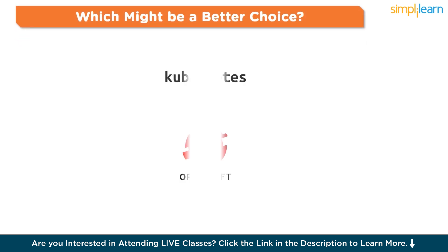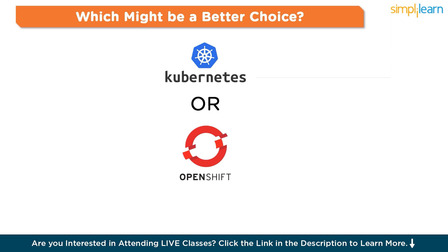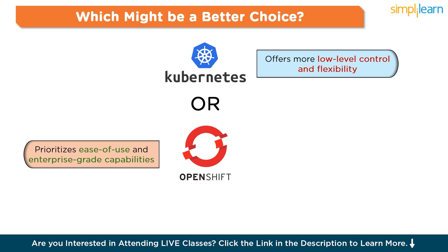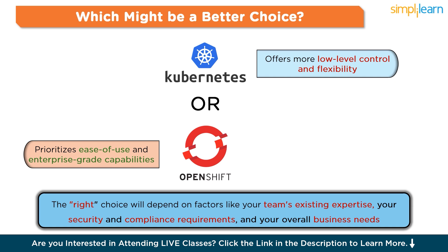Let us now understand which might be a better choice — Kubernetes or OpenShift. In summary, Kubernetes offers more low-level control and flexibility, while OpenShift prioritizes ease-of-use and enterprise-grade capabilities. The right choice will depend on factors like your team's existing expertise, your security and compliance requirements, and your overall business needs. If you have a large enterprise with complex security and operational demands, OpenShift may be a better fit. But if you have a highly technical team and value more customization, Kubernetes could be the way to go. Ultimately, I would encourage you to evaluate both platforms and see which one aligns best with your organization's unique requirements.